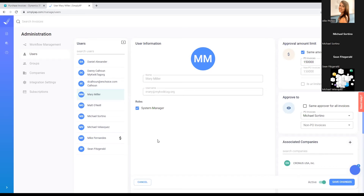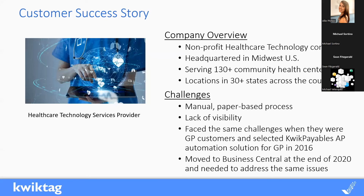That's great, thank you Michael. A picture says a thousand words, but we also want to talk about a customer case study. This company was a nonprofit healthcare technology company that provided services to over 130 community health centers, with multiple locations across the country. Everybody wants AP automation, whether they have one location or multiple. This client was already a QuickTag client using QuickPayables for Dynamics GP. When they moved to BC, they needed AP automation for BC — but we weren't ready yet with Simply AP.